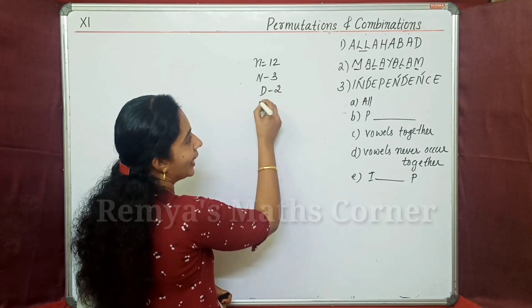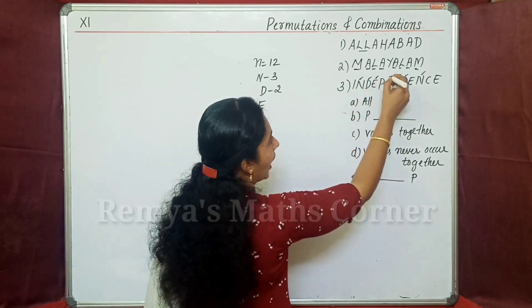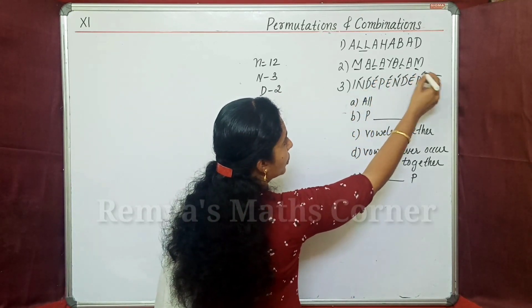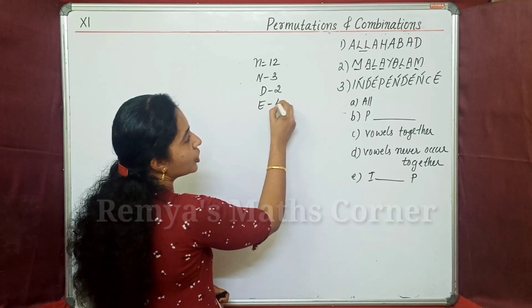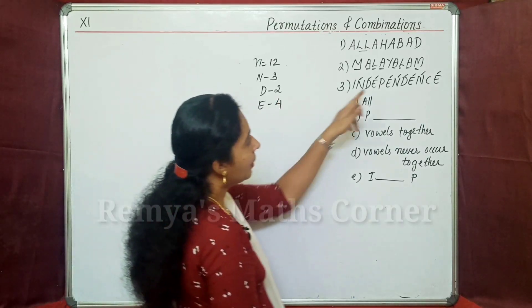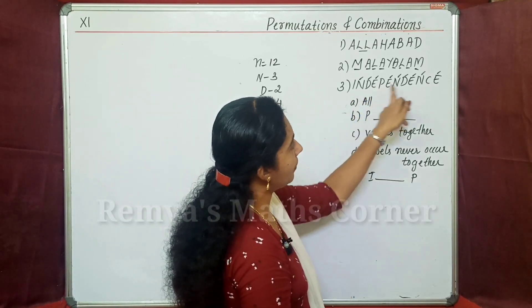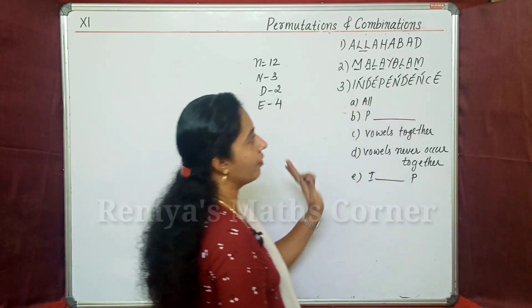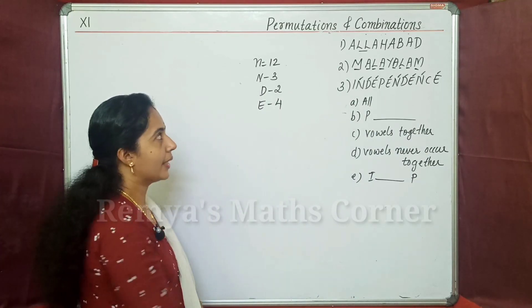Two, two, repeat. E repeat. One, two, three, four. Four, repeat. P, not P, not C. This is repeat.